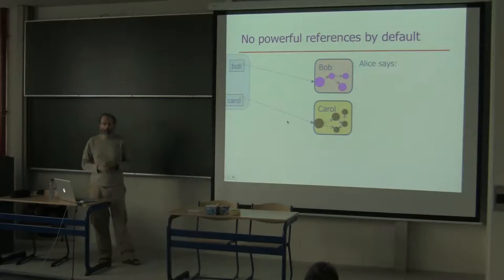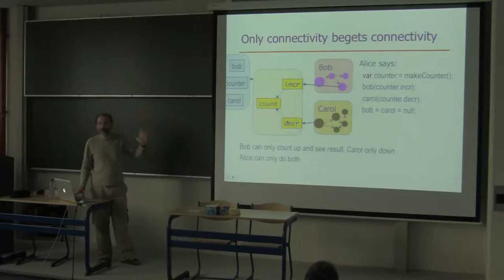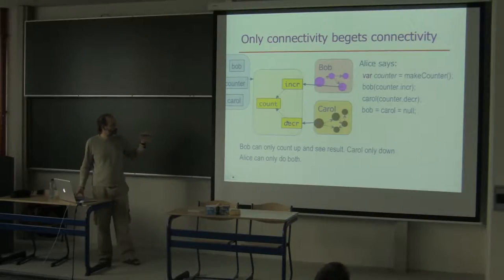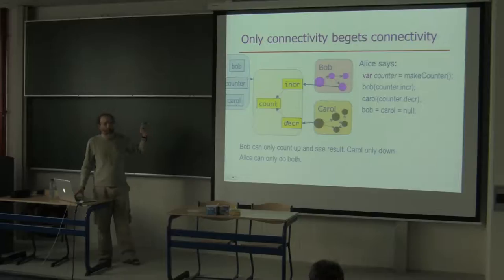What might Alice do with this position of great power? If Alice instantiates her counter, gives Bob access to the increment method, gives Carol access to the decrement method, zeroes out her Bob and Carol variables, and holds on to the counter — then from this point forward the only possible interaction among these three parties is that Bob can count up and see the result, Carol can count down, and Alice can do both. This is expressing policy by the behavior of objects provided, and locating those policy-expressing objects at strategic points in the graph topology.